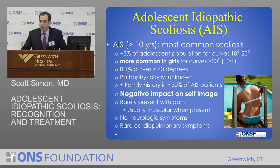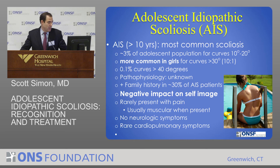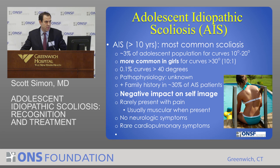Scoliosis is the most common deformity we see, occurring in around 3% of adolescents — those with age greater than 10. The vast majority of scoliotic curves occur in girls, 10 to 1 as opposed to boys, and the curves are often small. A small minority are actually greater than 40 degrees. The important term in adolescent idiopathic scoliosis, or AIS, is idiopathic — we just don't know what causes it, despite it being a recognized disorder for thousands of years.